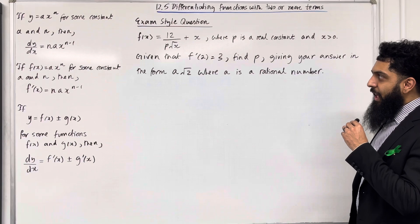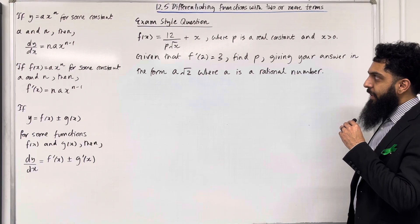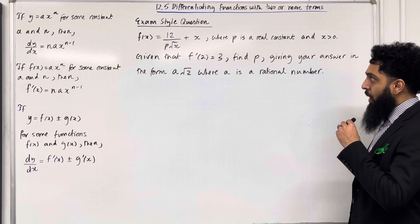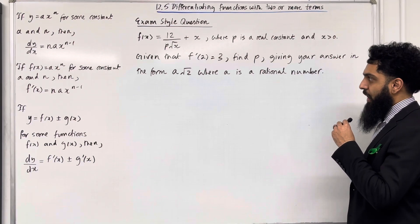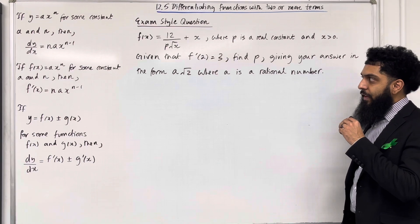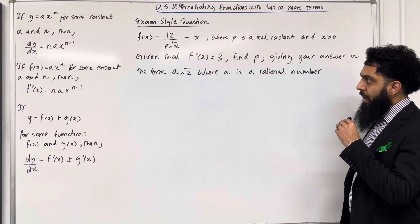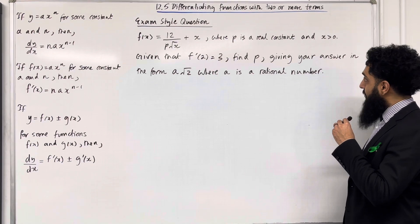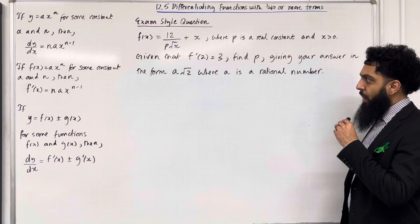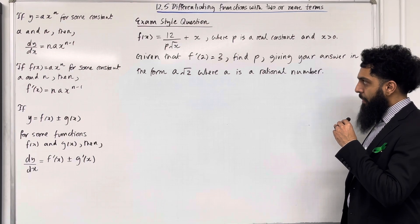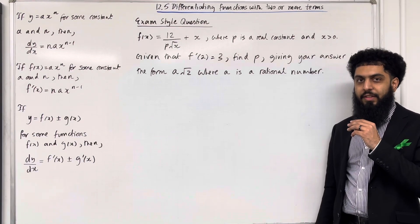f(x) is equal to 12 over p√x plus x, where p is a real constant and x is greater than 0. Given that f'(2) is equal to 3, find p giving your answer in the form a√2, where a is a rational number. Let's have a look at the solution.